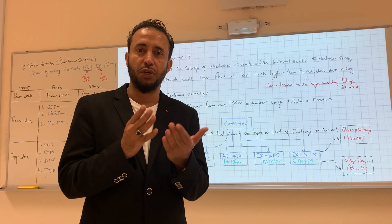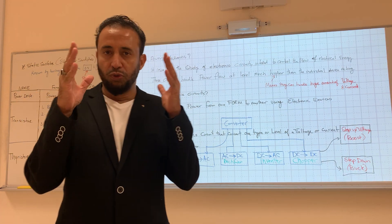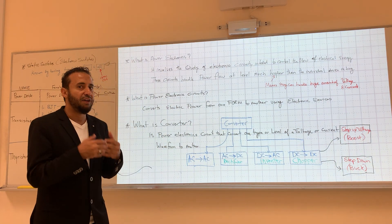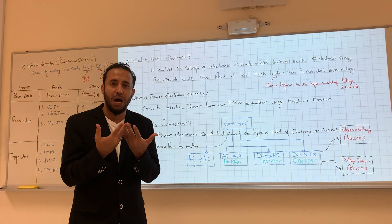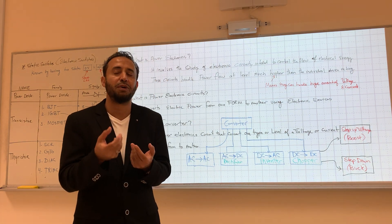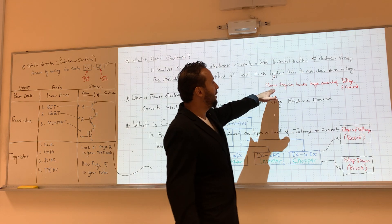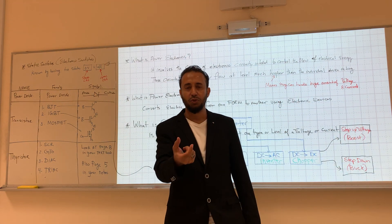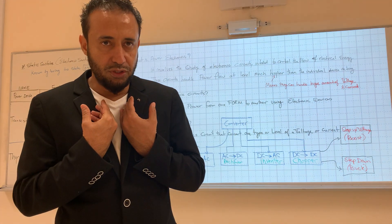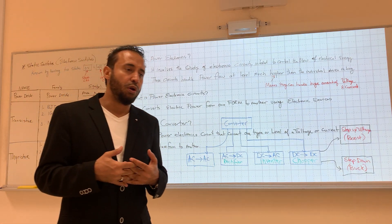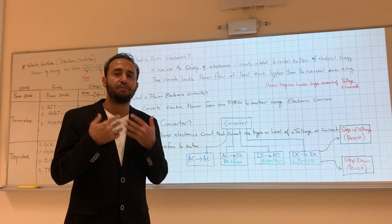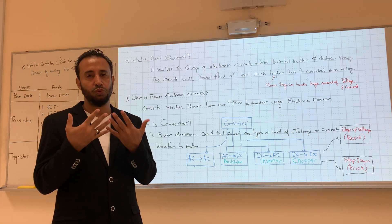You worked with diodes and transistors — it will be the same concept, but in power electronics the devices are called power diodes and power transistors. A power diode means the diode can handle a huge amount of voltage and current. The transistors we use will be IGBTs or MOSFETs — power transistors that handle high voltage and current.